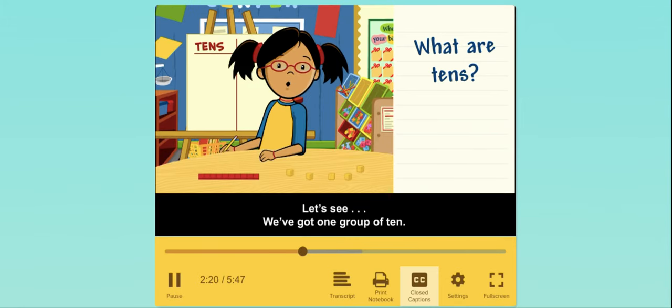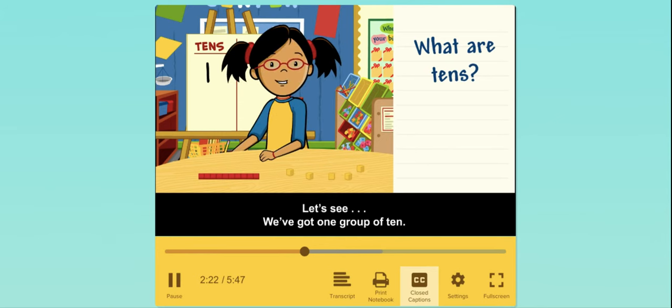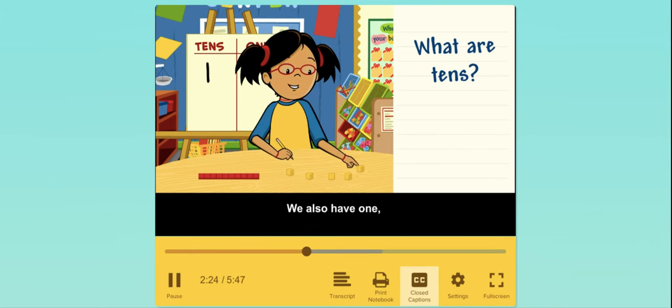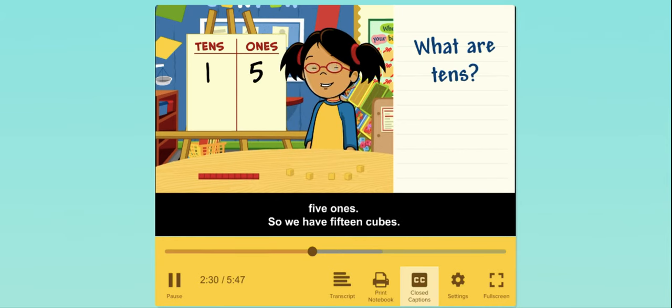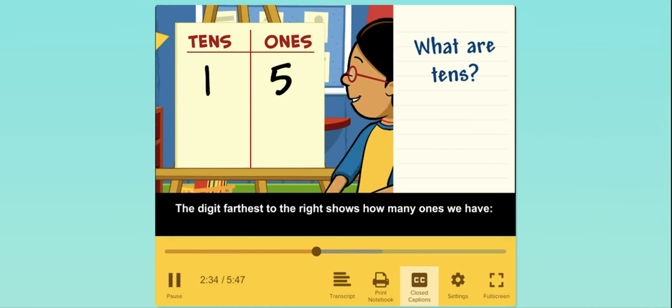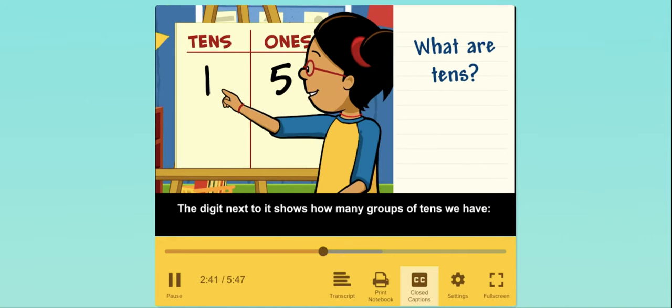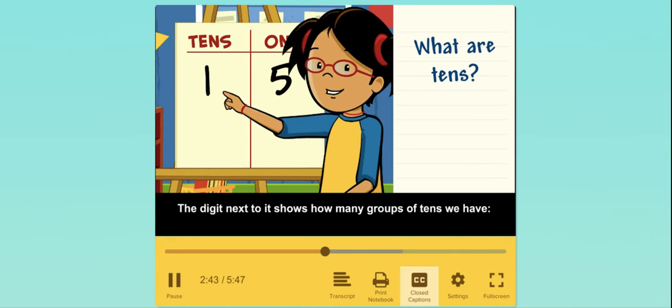Let's see. We've got one group of ten. We also have one, two, three, four, five ones. So we have 15 cubes. The digit farthest to the right shows how many ones we have: five ones. The digit next to it shows how many groups of tens we have: one group of ten.